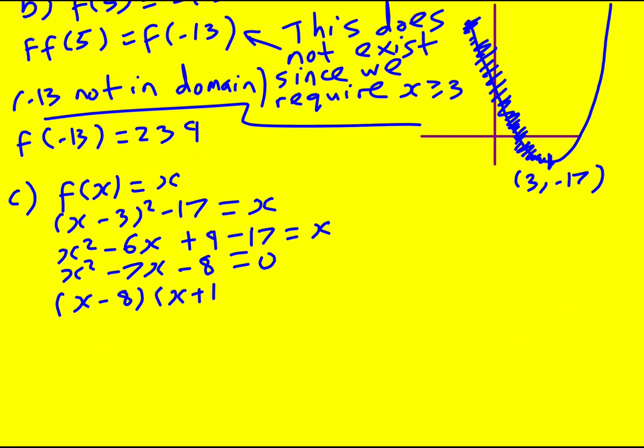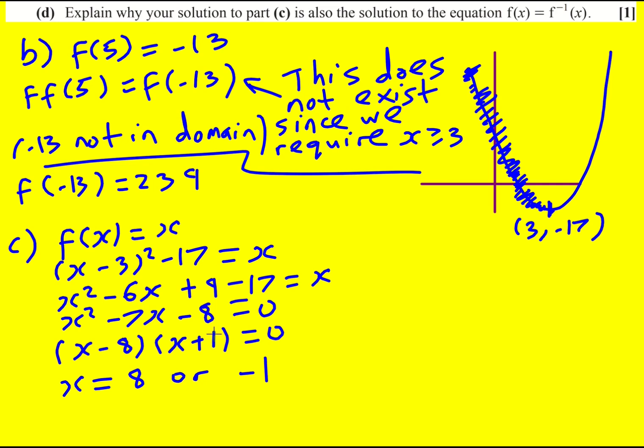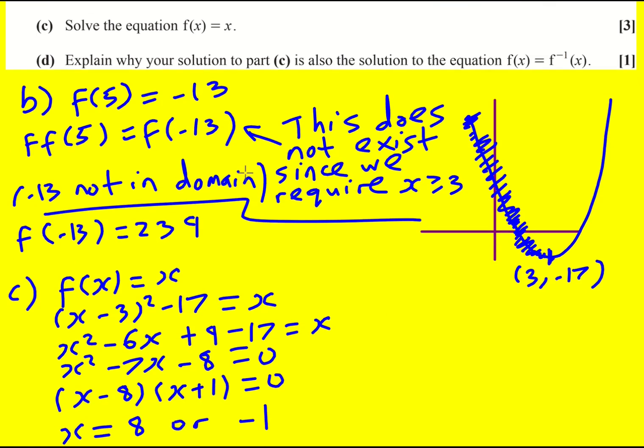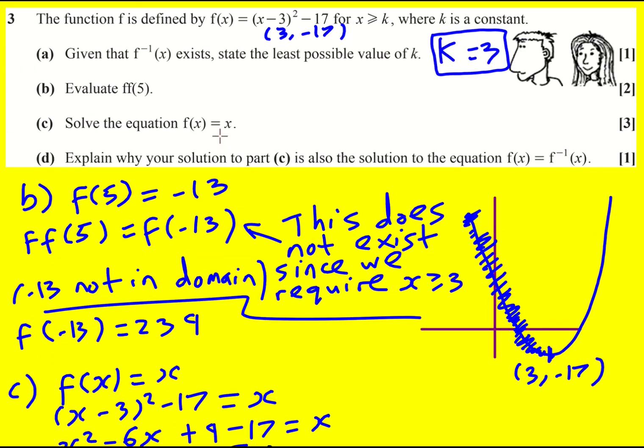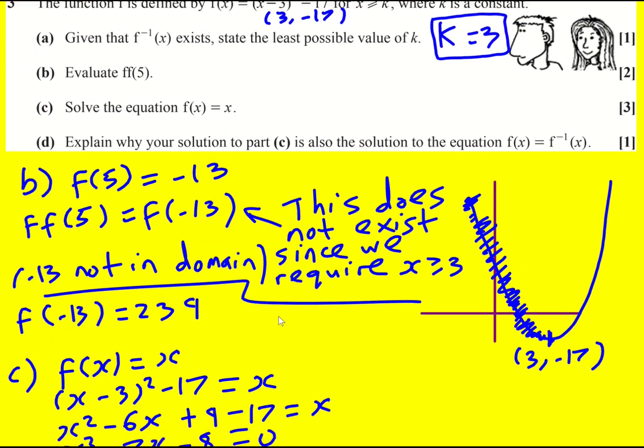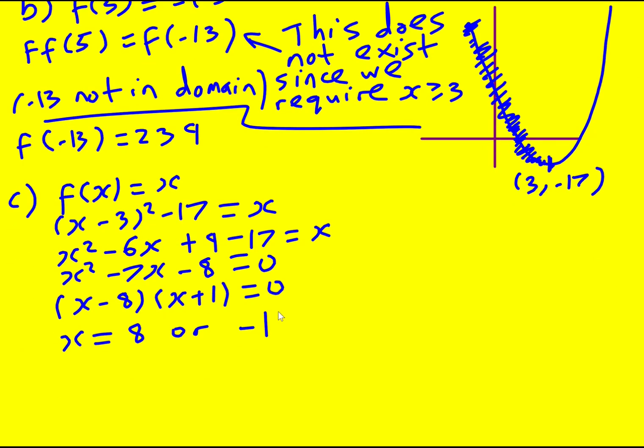Factorize, so I've got x equals 8 or minus 1. Now it is expected this time that you realize to reject the minus 1. Yes, it is; if you did have the whole curve it would be a point of intersection with f of x, but we have to incorporate the domain. x has to be greater or equal to 3.